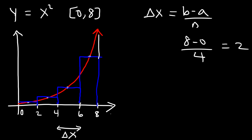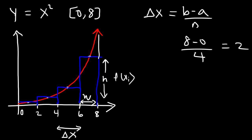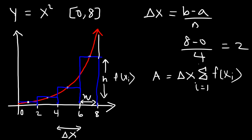To calculate the area of each rectangle, we multiply the width, which is delta x, times the height of each rectangle — that's the y value corresponding to a given x, or f of x at sample point x sub i. The total area is the width times the sum of the heights of all rectangles, from i equals 1 to n. Here n is 4 because we have 4 rectangles.